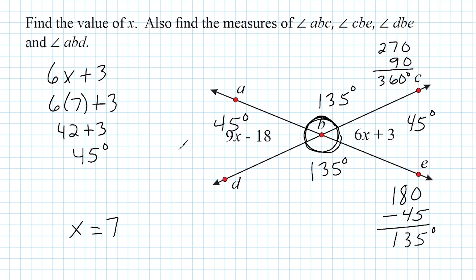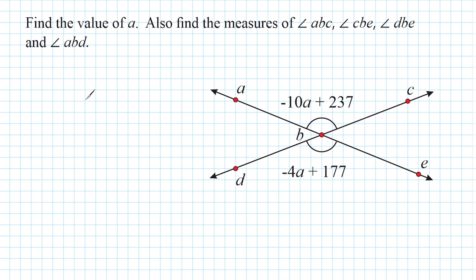Let's go ahead and do another example. For this problem we have to find the value of A — so instead of using the variable X like in the last problem, we use A. And we have to find the measures of all four angles shown here.